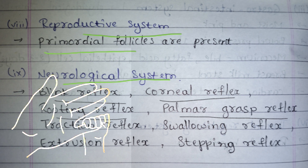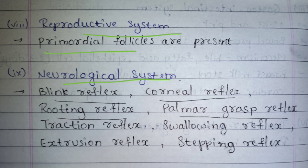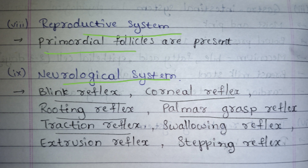Next is the palmar grasp reflex: if you place your finger or any object in the palm of the baby, the baby holds and grabs it tightly. Next is the traction reflex: if you make the baby sit by holding its wrists, since the baby has no control over its head, the head initially falls backward, then the baby tries to bring the head straight but cannot maintain it, so the head falls forward onto the chest. This action is known as the traction reflex.